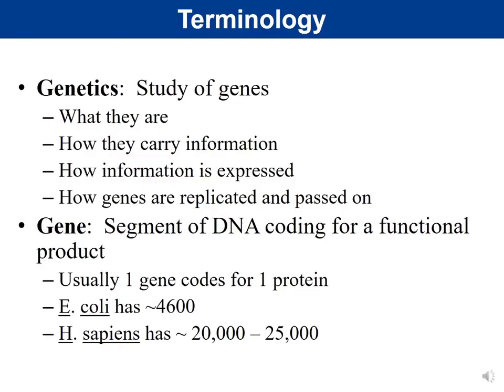A gene is a segment of DNA coding for a functional product. Historically, we thought of a gene as coding for protein, but not all DNA codes for protein — some DNAs code for types of RNA that don't form proteins but do play an important role in the cell. Usually, one gene codes for one protein, though there are exceptions.